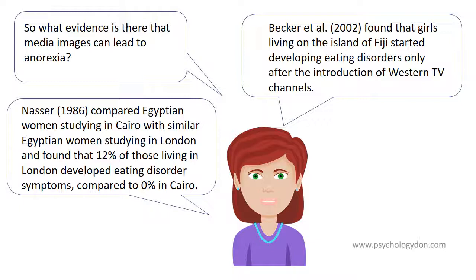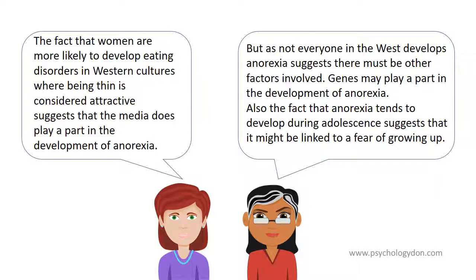So what evidence is there that media images can lead to anorexia? Becker et al. (2002) found that girls living on the island of Fiji started developing eating disorders only after the introduction of Western TV channels and the idea of thin being beautiful. A study compared Egyptian women studying in Cairo with similar Egyptian women studying in London. In Egypt, having a fuller figure is considered more beautiful. They found that 12% of those living in London developed eating disorder symptoms compared to 0% in Cairo. The fact that women are more likely to develop eating disorders in Western cultures where being thin is considered attractive suggests that the media does play a part in the development of anorexia.